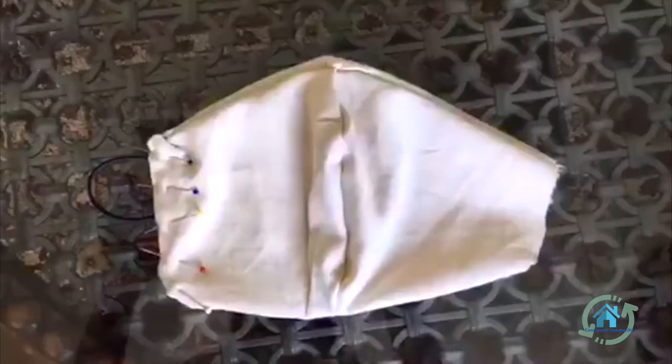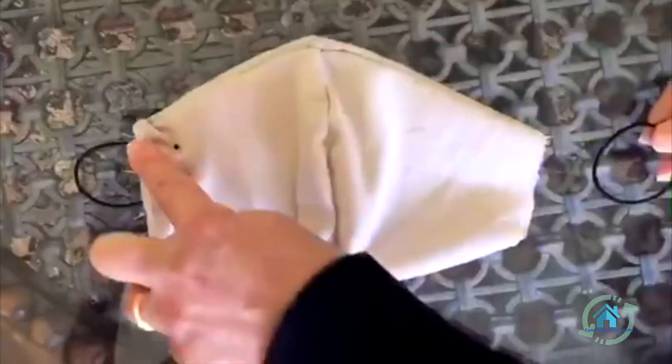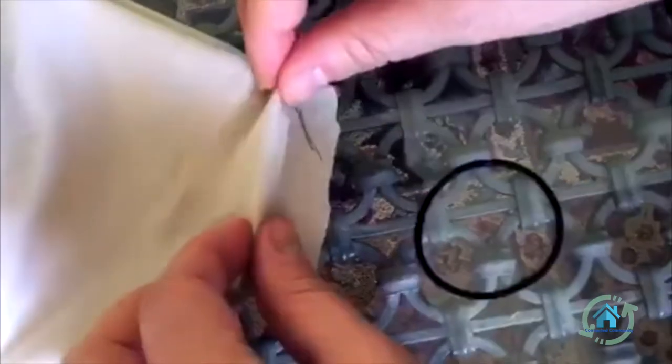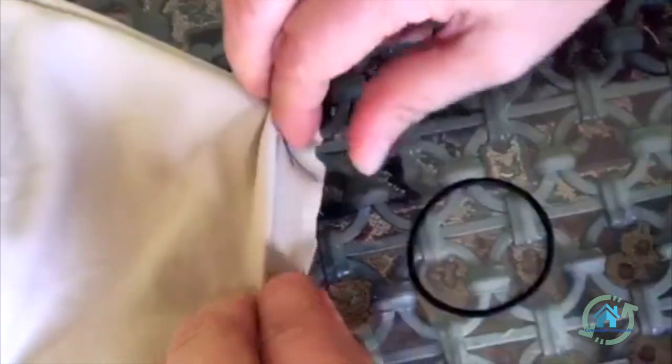So make sure you put the rubber bands closer to the top than the lower. So you're going to want to fold over the sides that you're going to be sewing.